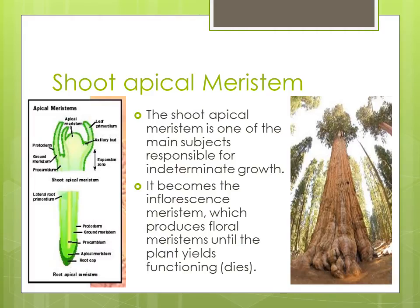Now we're going to talk about the shoot apical meristem, which is one of the main subjects responsible for indeterminate growth. It becomes something called the inflorescence meristem, which produces floral meristems until the plant ceases functioning — in other terms, dies. If we remember, floral meristems deal with determinate growth; they give rise to the sepals, petals, and the different aspects within the flower itself.